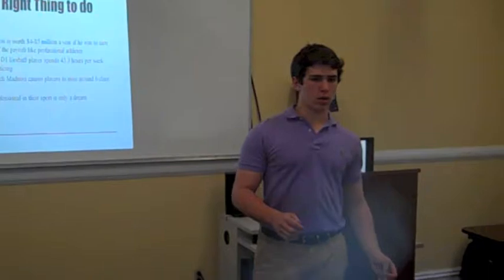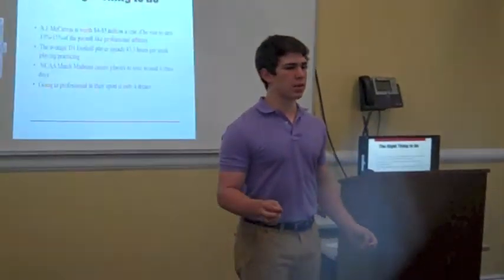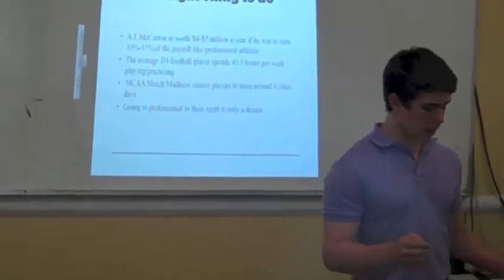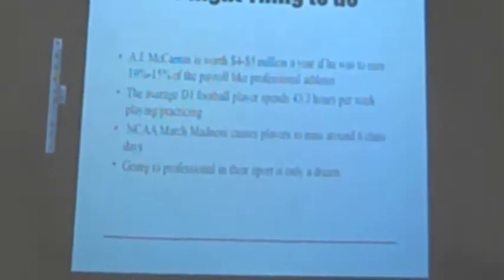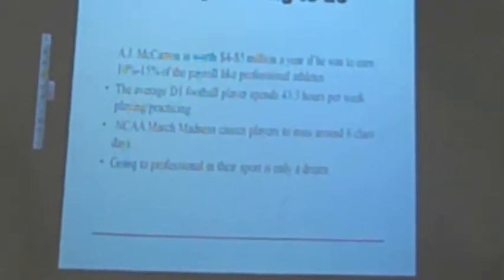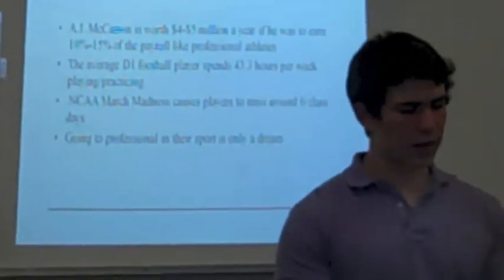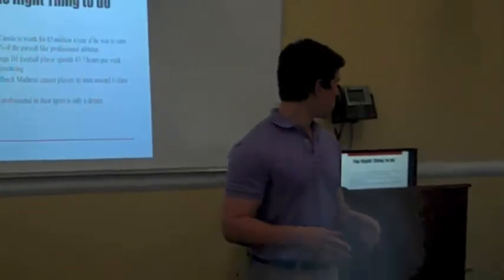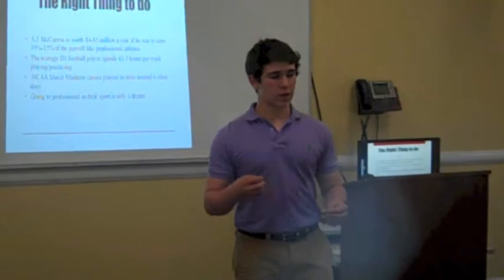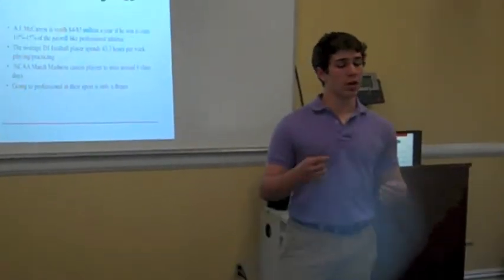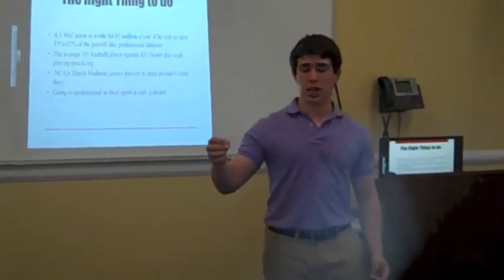We also see J.S. Mills' utilitarianism idea when thinking about should they be paid, what is the right thing to do? J.S. Mills said, the right thing to do is what will produce the most good. You have student-athletes that don't have enough money to make it by, but they're going because this is a way they can get an education, and it's free.